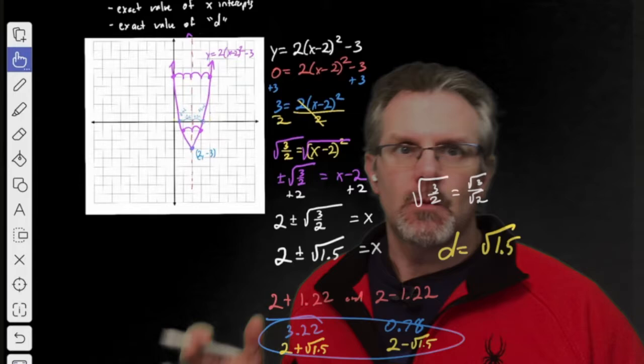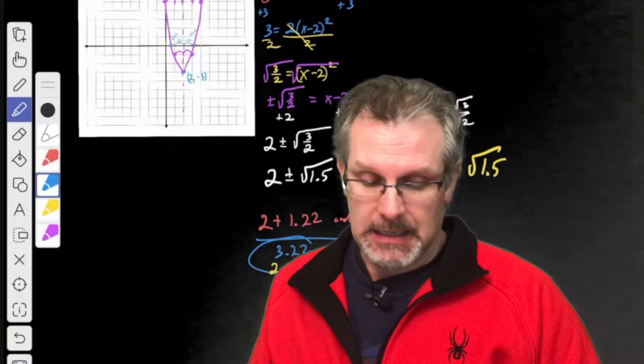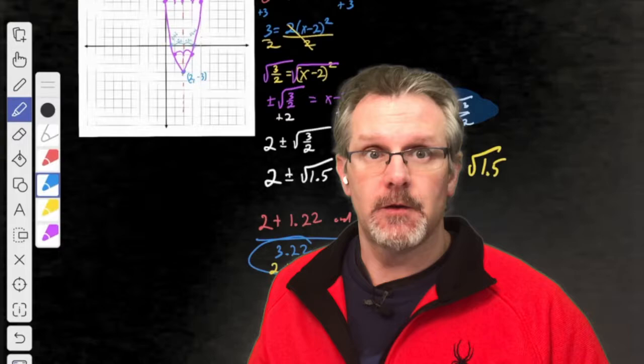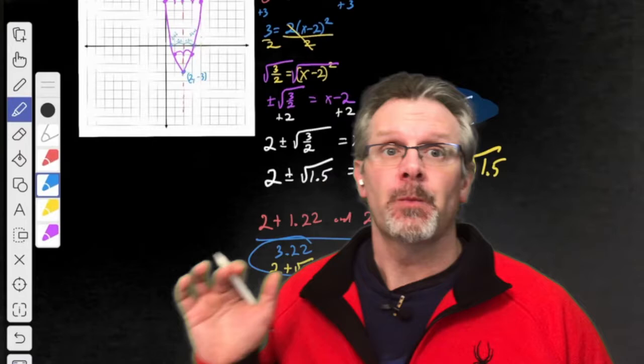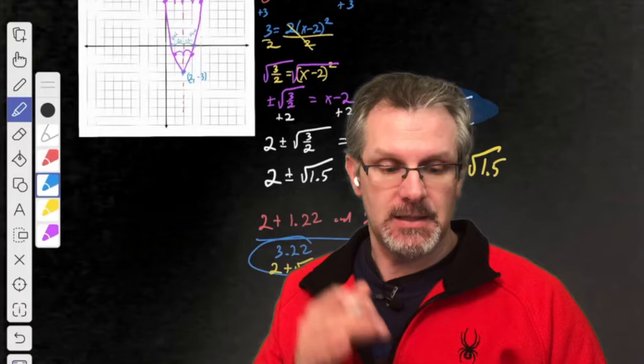We just finished solving for the intercepts when we have an A term. The problem is we ended up completing the square, and as we saw in class, this results in a radical underneath the denominator because it doesn't always work out as nice and neat as we would hope. So what we're going to do next is look at how we develop the quadratic formula based on standard form.